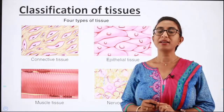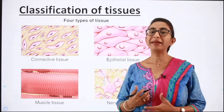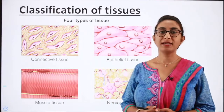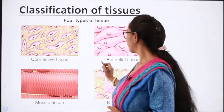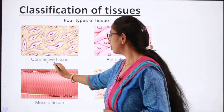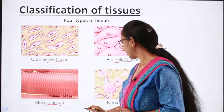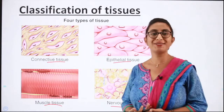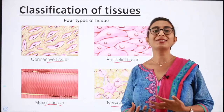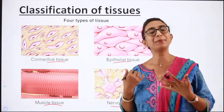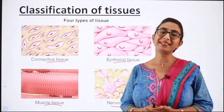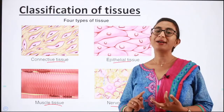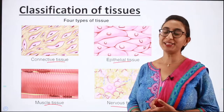The tissues in the human body can be divided into four basic types: the epithelial tissue, the connective tissue, the muscular tissue, and the neural tissue, which can also be called nervous tissue.